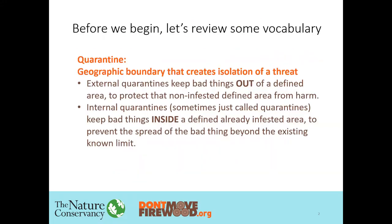A quarantine. The quarantines we talk about are two different types. They're both geographic boundaries that create the isolation of some sort of a threat, but they are either an external quarantine, which keeps bad things out of a defined area that you want to protect, or an internal quarantine. Sometimes people call an internal quarantine just a quarantine because that is the traditional type, and that keeps bad things inside of a defined area to protect everything farther away from it.